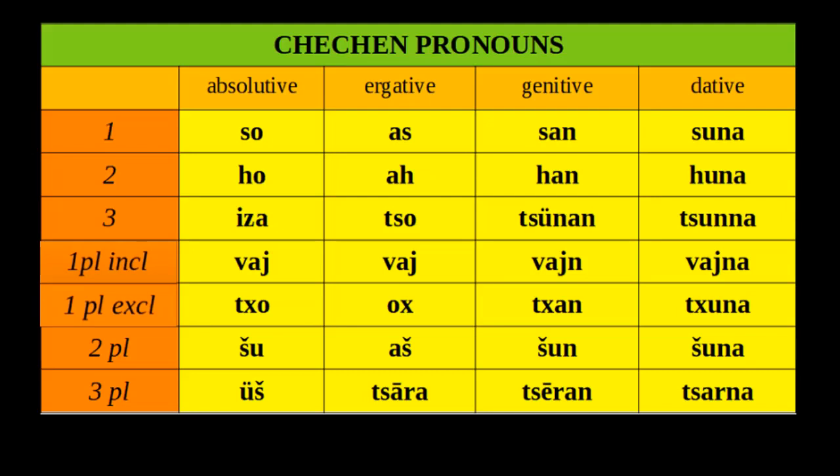The ergative case is used as the subject of transitive verbs — that is, verbs that have an object. The genitive and dative cases are pretty much as in European languages: the genitive has a possessive function, and the dative marks the receiver of an action. We can also see that in Chechen there's a distinction between first person plural exclusive and first person plural inclusive.